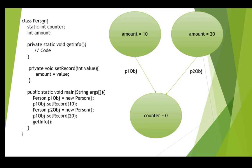When we create objects of the Person class, each object will have its own amount variable — as you can see in this diagram, person one object will have its own amount and person two object will have a separate amount variable. However, you may be in a situation where you need a common value shared across your project, and that static variable — the class variable — will be accessible throughout your whole project without needing an object reference.